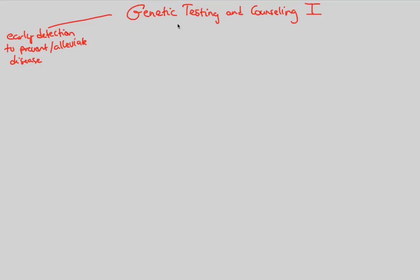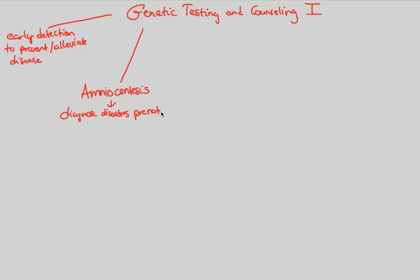There are two main types of genetic testing we're going to cover in this flowchart. The first one is called amniocentesis. This first type of genetic testing is utilized to diagnose disorders prenatally — meaning this is happening within the womb.